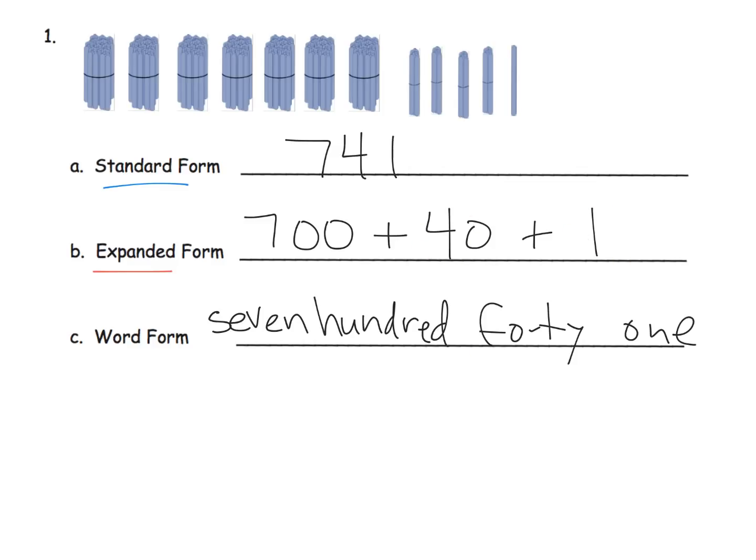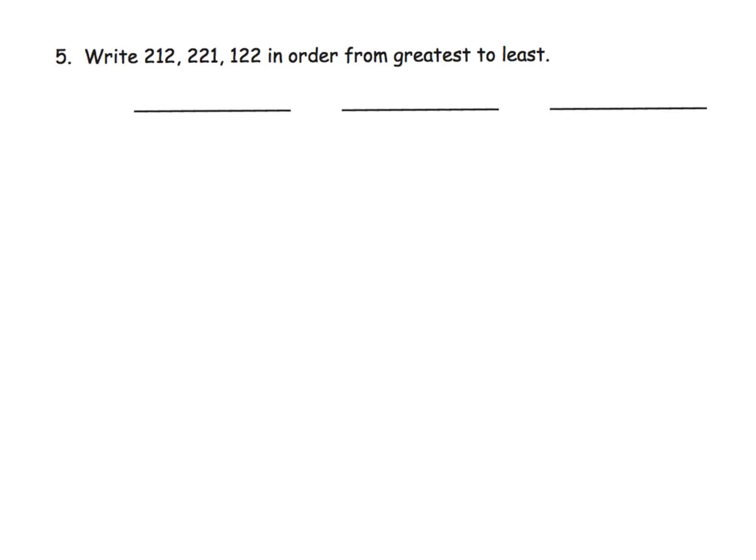The one thing we did not have is unit form. What unit form would look like would be seven hundreds—that's the seven bundles—four tens, there's your 40, and one unit or one one. And there you go. So now we have all four forms: standard, expanded, word, and unit.